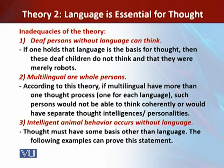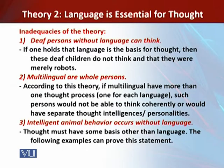Persons knowing three languages would have formed three systems of thought. However, this is not true, because it is proved through research that a multilingual and a monolingual child living in the same environment have no difference in terms of beliefs, values, personality, and their perceptions of the world and nature.